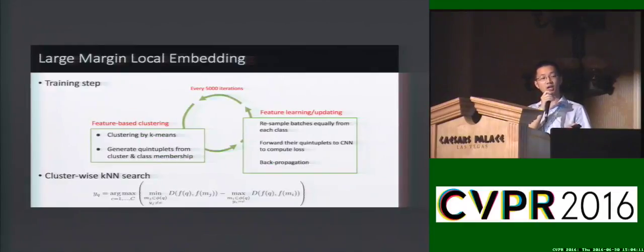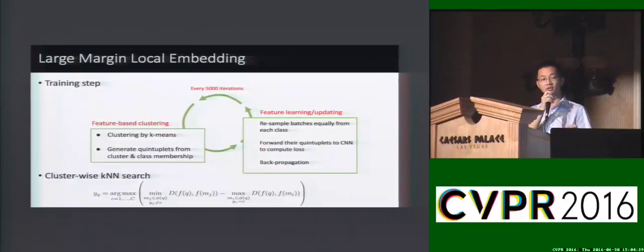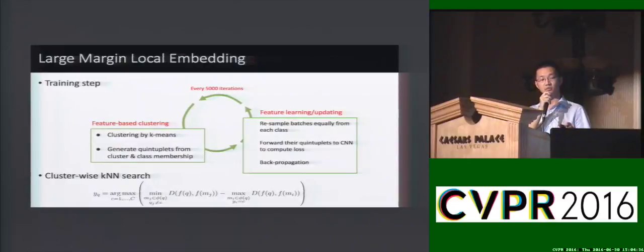This is how our training step looks like. It alternates between clustering to generate the quintuplets and using the quintuplets to update the features. This produces a well-clustered feature embedding, and we can perform classification by only using the cluster-wise KNN search, which is very fast and more resistant to class imbalance by applying the large margin rules.